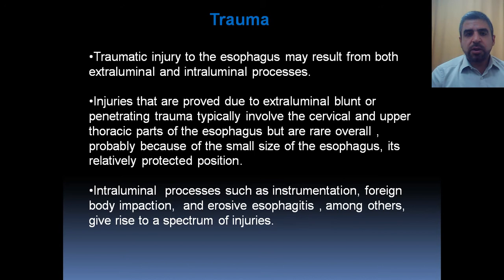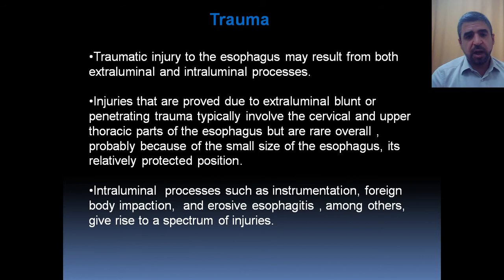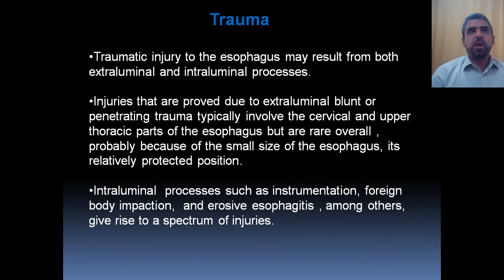Regarding trauma of the esophagus, traumatic injury results from both extra-luminal and intra-luminal processes. Extra-luminal blunt or penetrating trauma usually involves the cervical and upper thoracic esophagus. However, injury at the cervical or upper thoracic parts is relatively rare because of the esophagus's small size and its relatively protected position — the trachea is anterior to it and the vertebral bodies are posterior. So there should be a massive trauma in order for the esophagus to be injured at these areas. Intra-luminal processes are much more common as a cause of esophageal trauma.